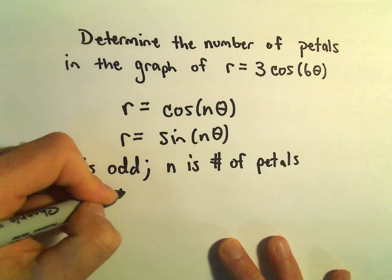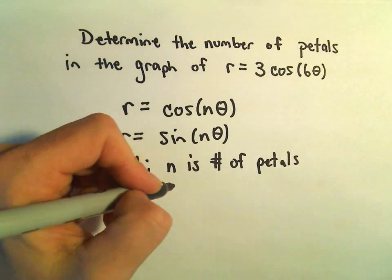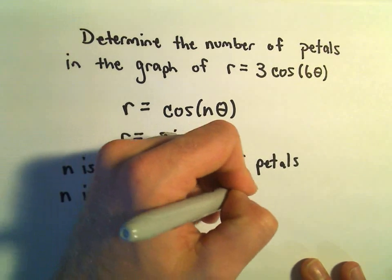If n is even, like we have in this case, our n value is just 6. It says then 2 times n is going to be the number of petals.